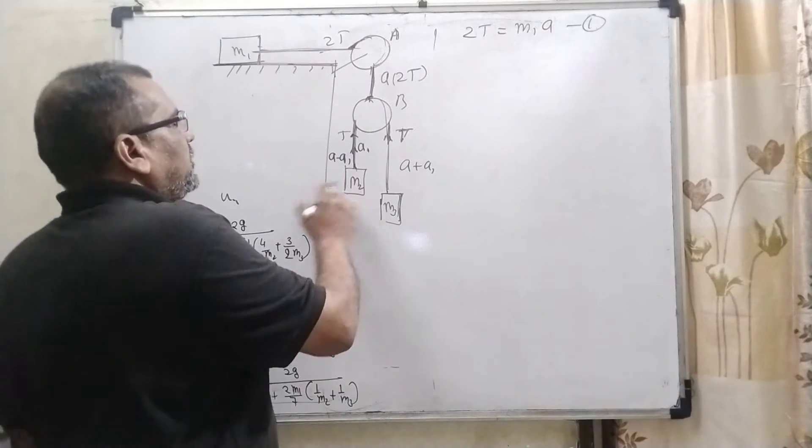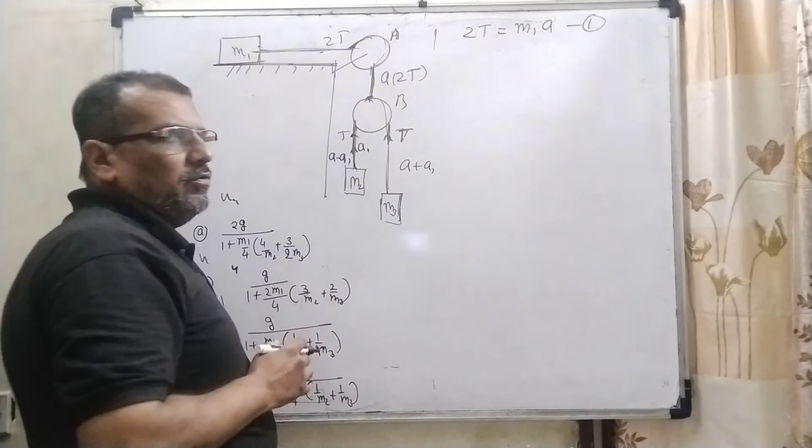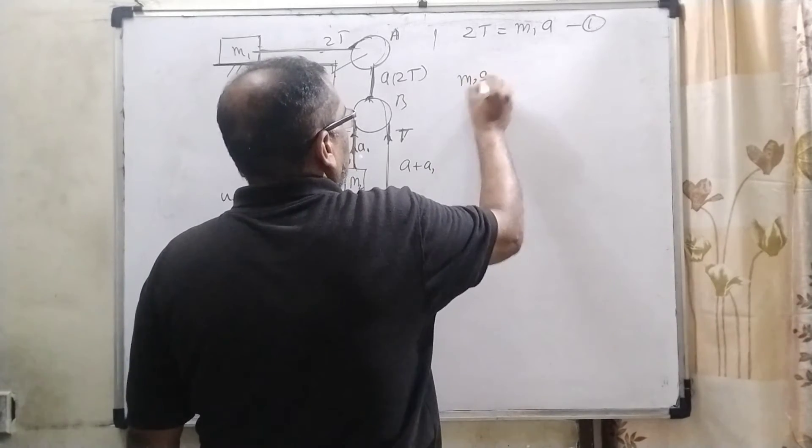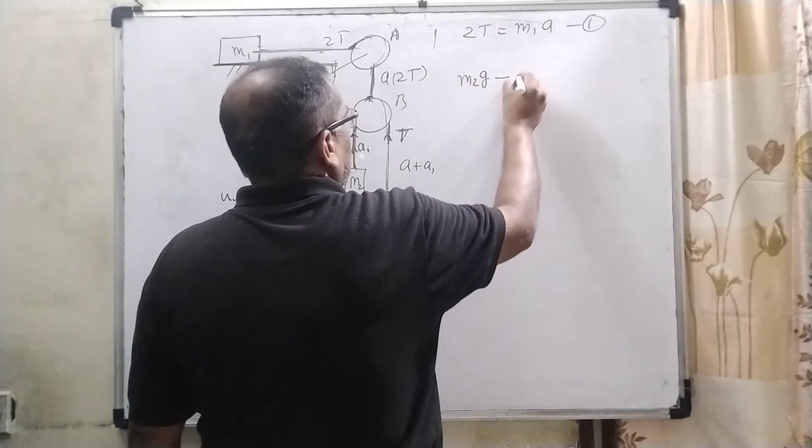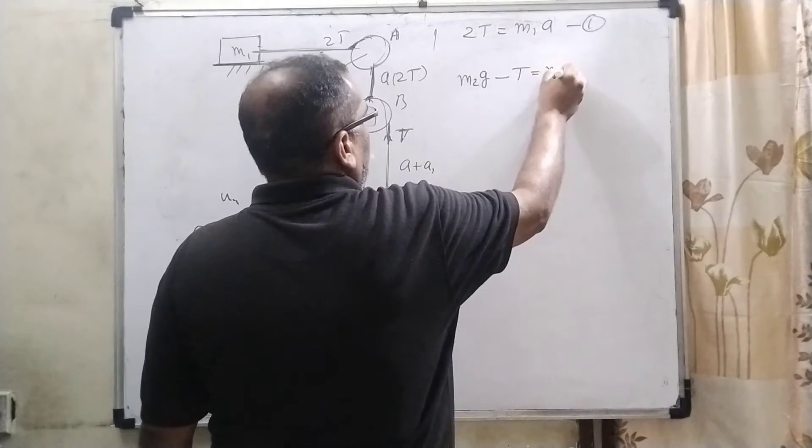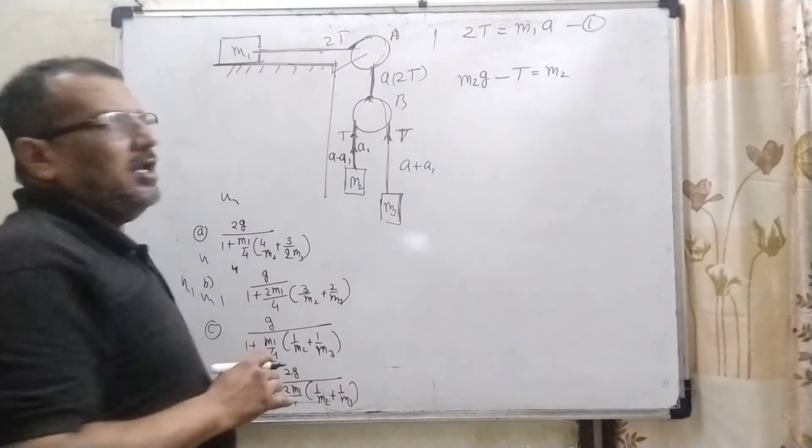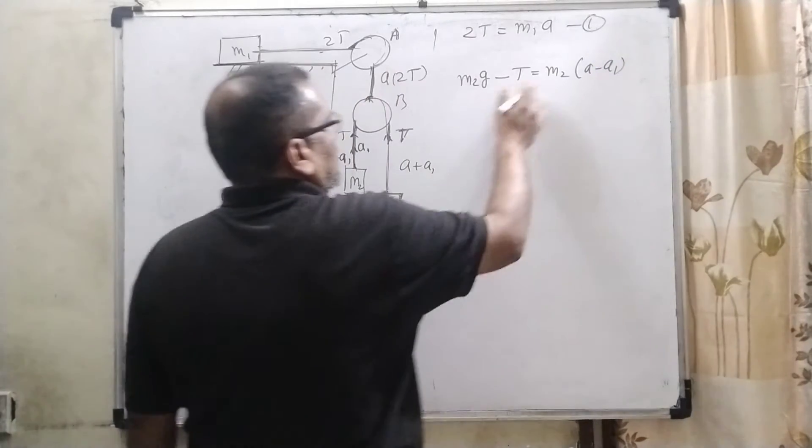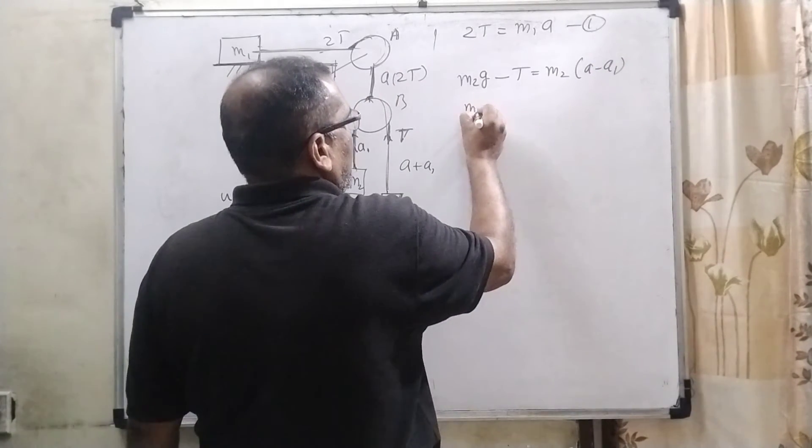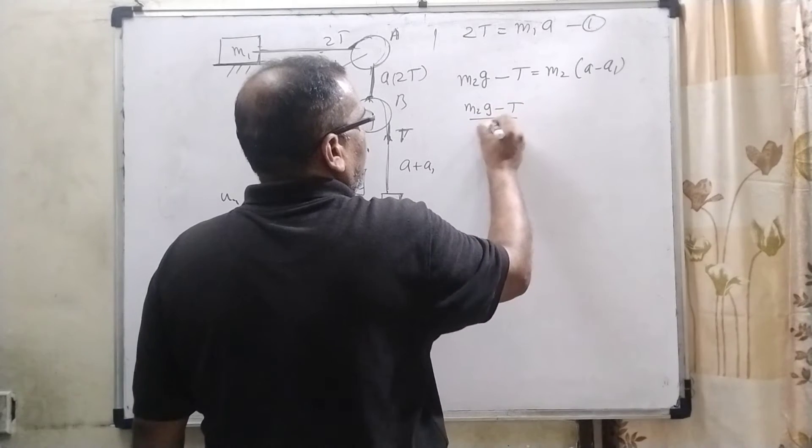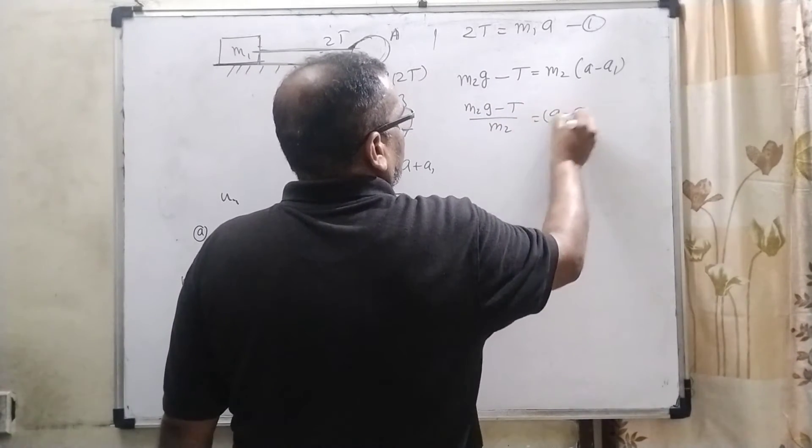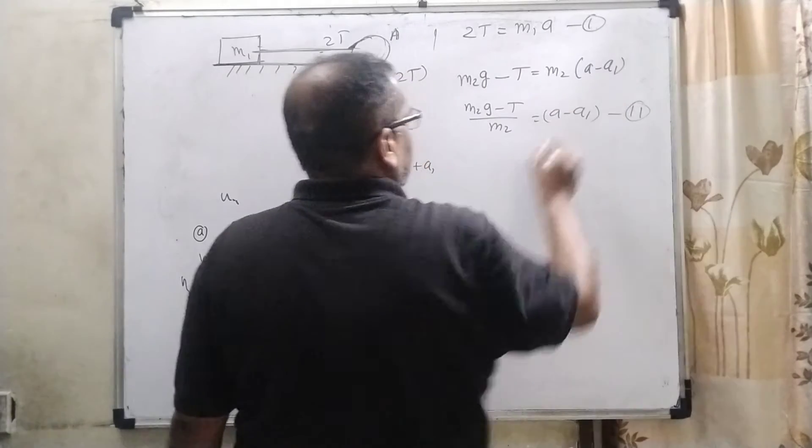And for the M2, whole system is falling downward direction. So therefore, we have M2 G minus T equal to M2 times net acceleration A minus A1. So therefore, it can be written as M2 G minus T upon M2 equal to A minus A1. It is the second condition.